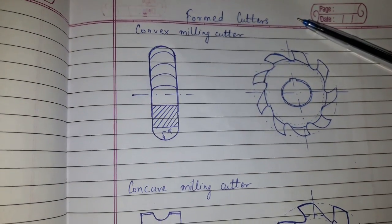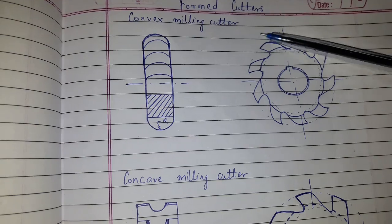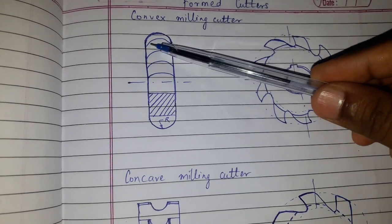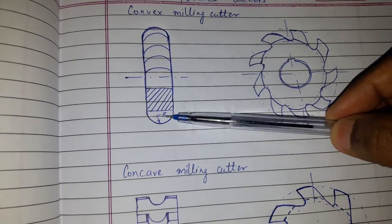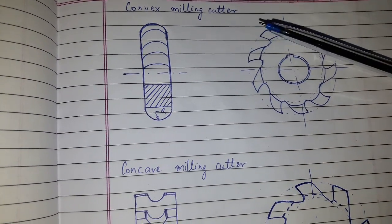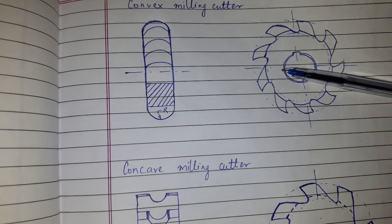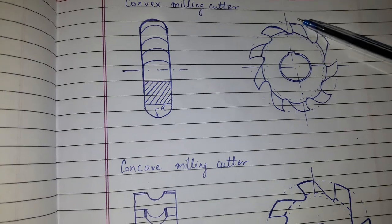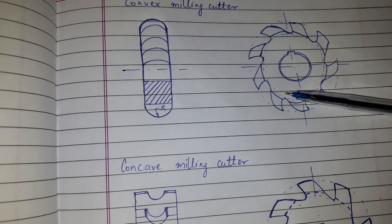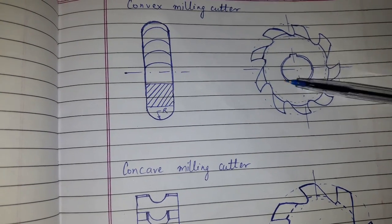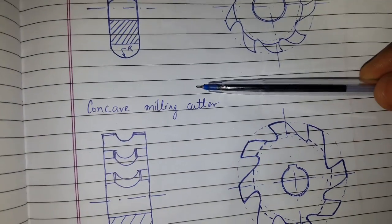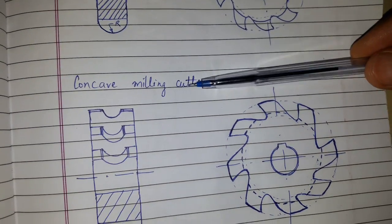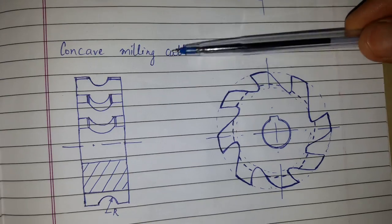There are different types. This is a convex milling cutter — this is how it looks. And this is a concave milling cutter.